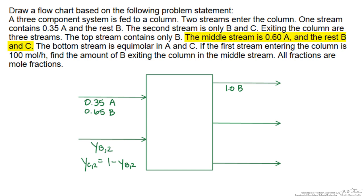The middle stream is 0.6A, and the rest B and C. But again we can use the fact that the summation of all the mole fractions has to equal one, to write Y sub C4 in terms of Y sub B4. So this is going to equal one minus our 0.6, which is our mole fraction of A, minus YB4.